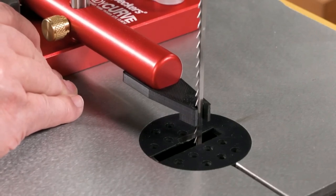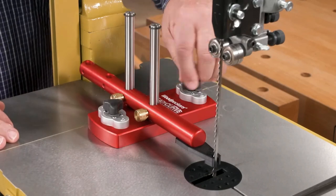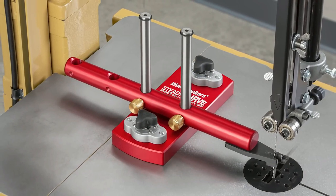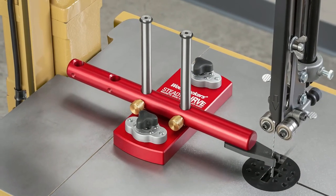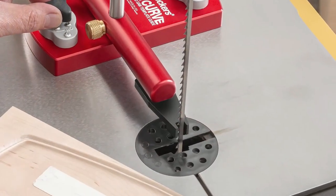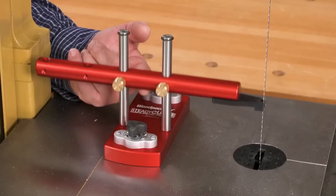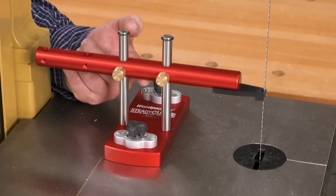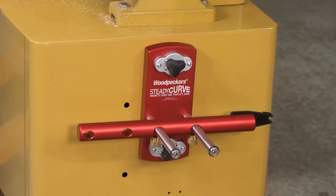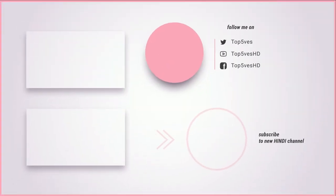Once woodworkers grasp the concept of following a pattern with a flush trim router bit, it usually becomes their preferred method for any contoured project. Woodpecker's new Steady Curve Bandsaw Template Guide streamlines the process by using the same concept to rough cut the workpiece. The template follower on Steady Curve straddles your band saw blade and holds it away from the pattern by up to one quarter inch.